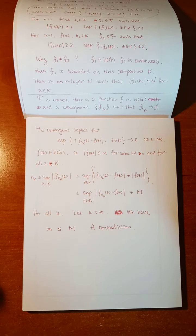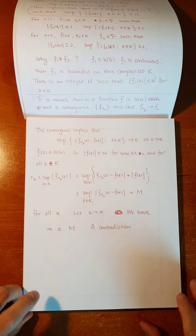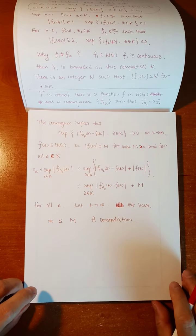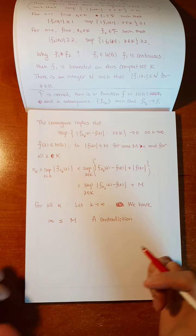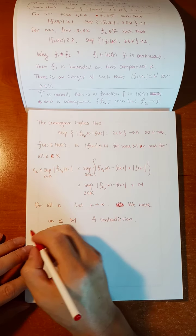So we showed that if F is a normal family, then it has to be locally bounded. That's one direction. Now let's prove the other direction.